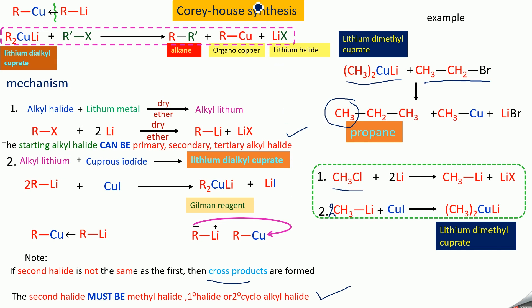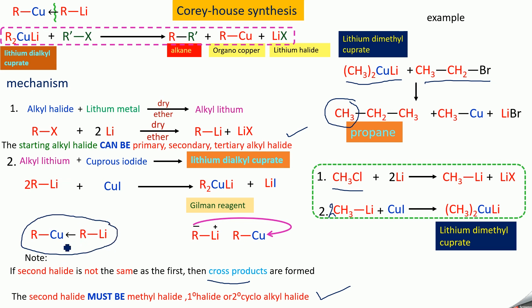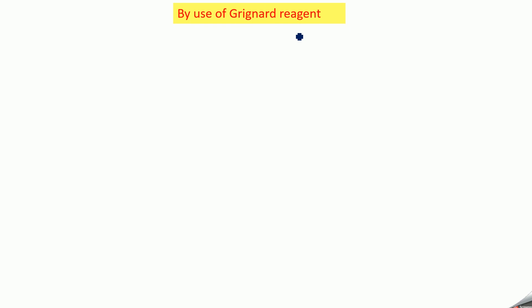In summary: for Corey-House synthesis, take Gilman's reagent treated with an alkyl halide — you will be getting an alkane with organocopper and lithium halide. To prepare that reagent, two steps are needed. The structure of the reagent is also very important, as the reaction mechanism is based on it.